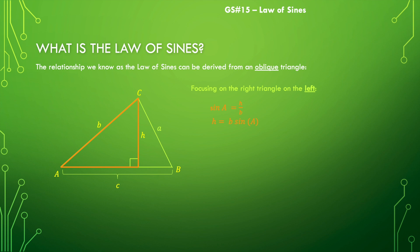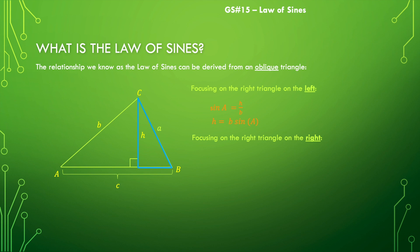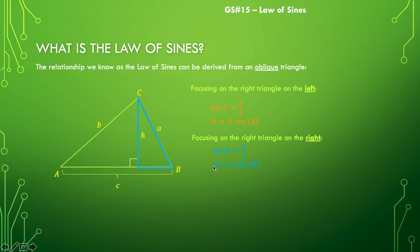Now let's put that right triangle away and look at the other right triangle formed — the right triangle on the right. We know it's a right triangle because of the right-angle notation, even though it's on the outside. In this case, we're going to focus on this blue right triangle and ask: what can you say about the sine of angle B? You should be able to say that the sine of angle B is H over A — opposite over hypotenuse. So we'll go ahead and solve for the height by saying H is equal to A times the sine of angle B. Notice that I ended up with two different expressions that are both equal to the height.